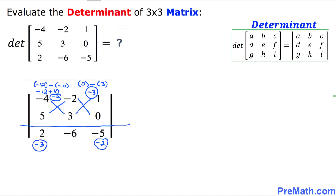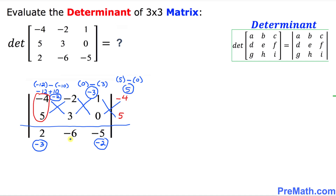Now look at the very first column on the left-hand side: negative 4 and 5. Copy it down and write it next to the matrix: negative 4, 5. Using the crisscross method again: 1 times 5 is going to be 5, then put a minus sign, and 0 times negative 4 is going to be 0. So 5 minus 0 is 5. This 5 goes in the middle right up here.